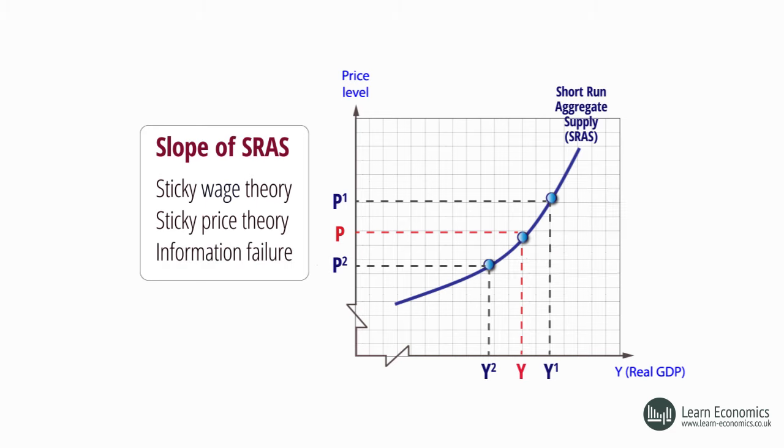Lastly, information failure can also help explain the positive slope of the SRAS curve. Suppliers may, wrongly, take the general price level as an indication of the specific market conditions facing them. For example, if the price level is rising, firms may assume their prices will also rise and increase their production.